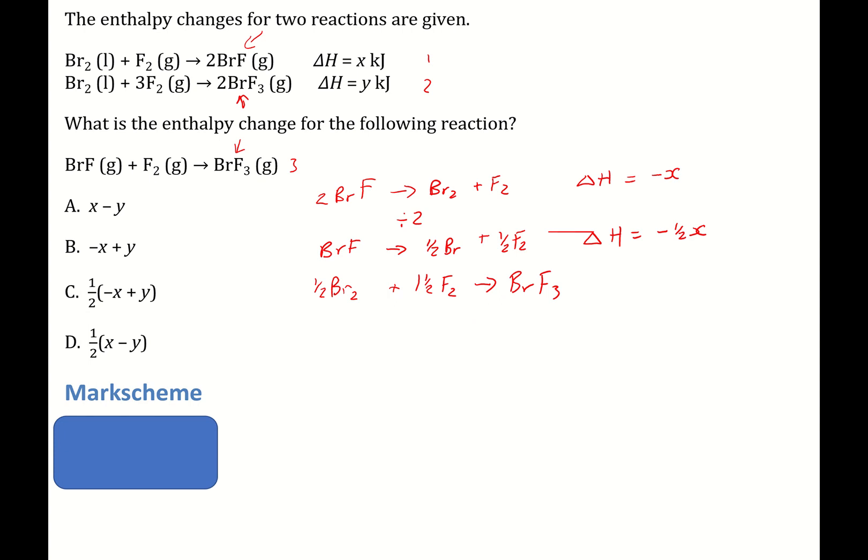So let's now eliminate things that we can from both sides of the equation. So there's a half bromine there that can be removed, that can be removed. So that's no longer needed. We can remove half and half there, which leaves behind this equation. BrF plus F₂, and this produces BrF₃.